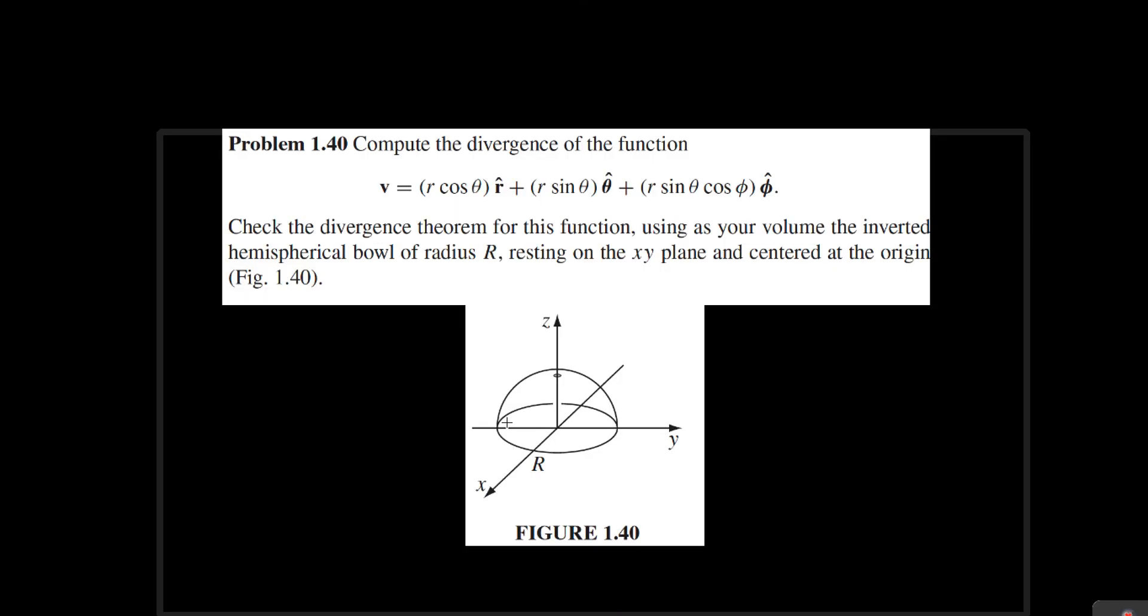So now we need to calculate the divergence over the volume of the region enclosed by the surface over here. So this is essentially a half a sphere. So you see that if you specify the parameters, so this is theta, and then this is phi, and then this length here is r, you see that phi goes from 0 to 2 pi, the r goes from 0 to big R, and then theta goes from 0 to pi over 2.